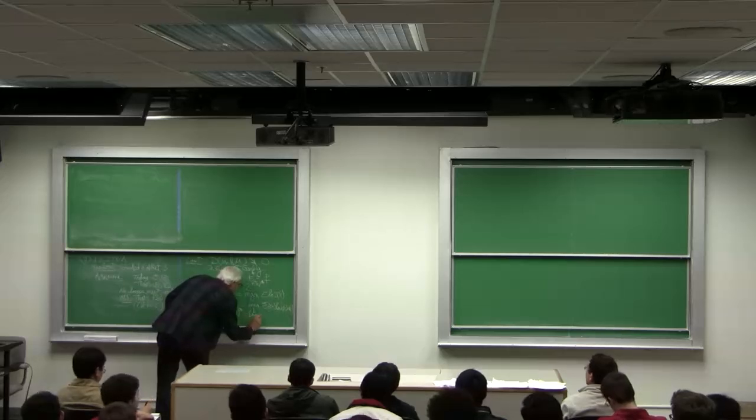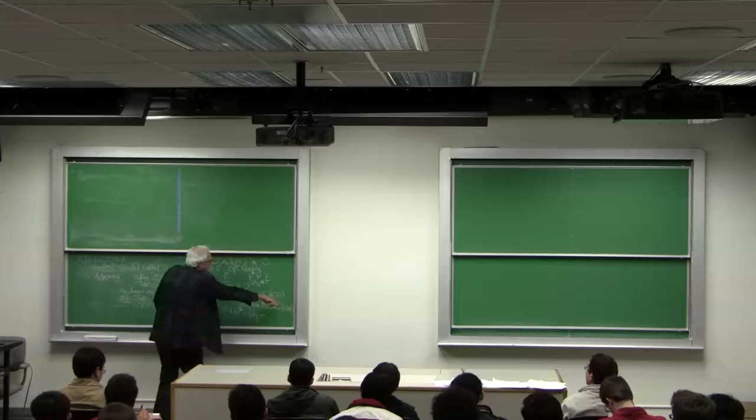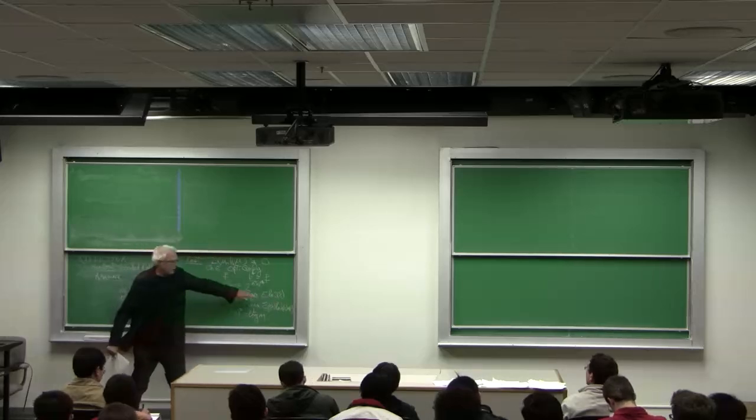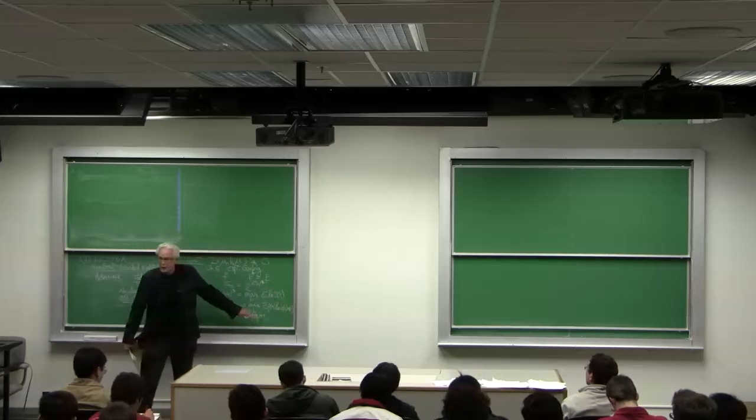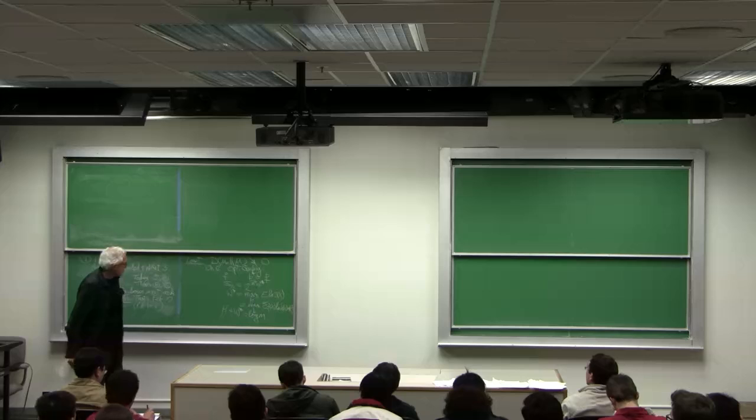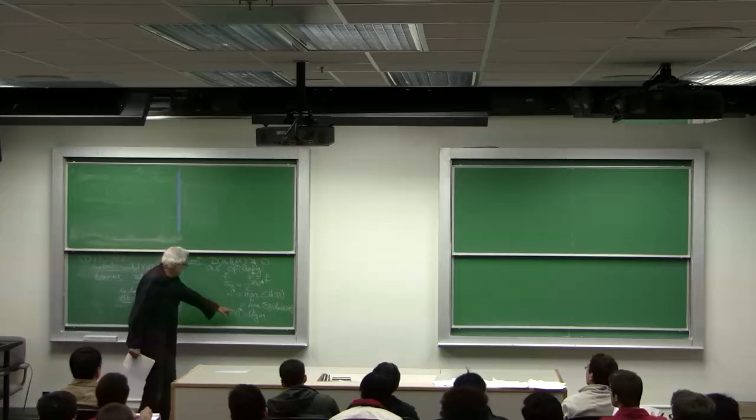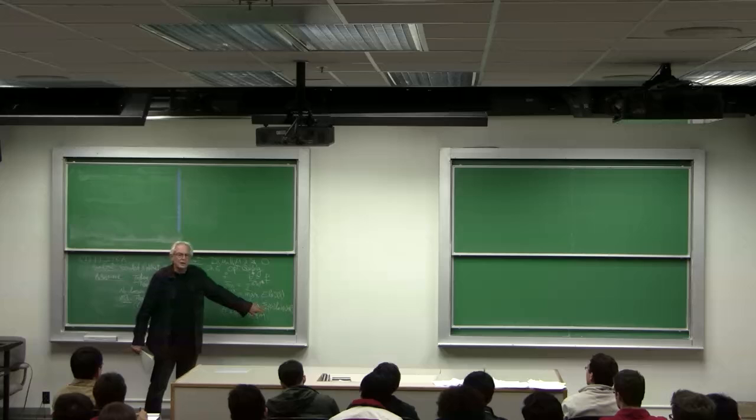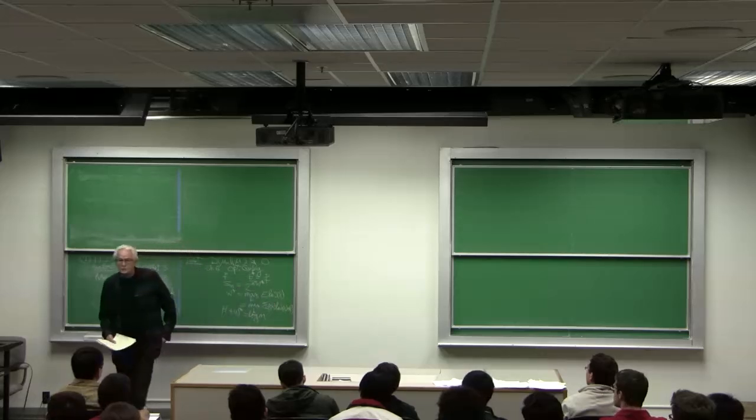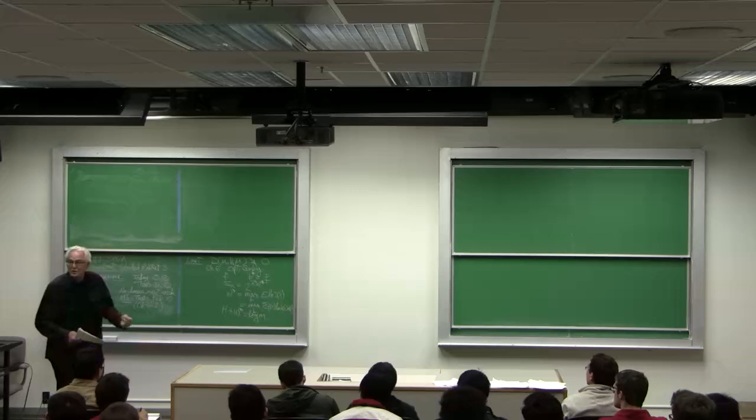And we showed also that H plus W star is log M. Again, we need qualifiers here. That's when the odds are uniform fair odds. So the doubling rate plus the entropy rate equals the log of the number of alternatives, the number of horses. So it's a nice conservation law.